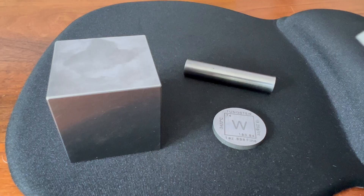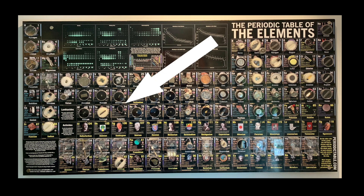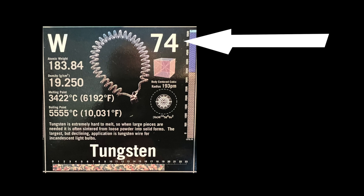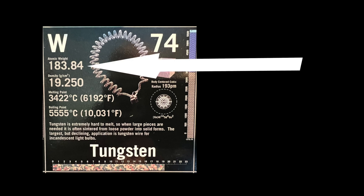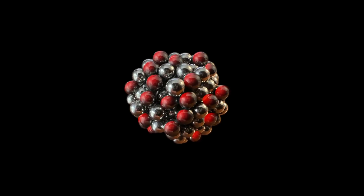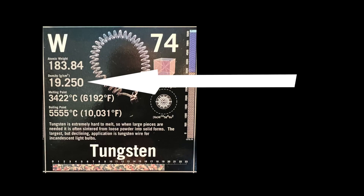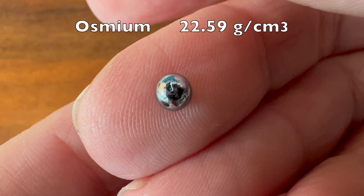Tungsten is a silvery-gray metal classified as one of the transition metals on the periodic table of the elements. Tungsten always has 74 protons. It has four stable isotopes with 108 to 112 neutrons, giving it an average atomic weight of about 184. It has one of the highest densities of the periodic table elements, being 70 percent more dense than lead and only 15 percent less dense than osmium, the densest of all the elements.